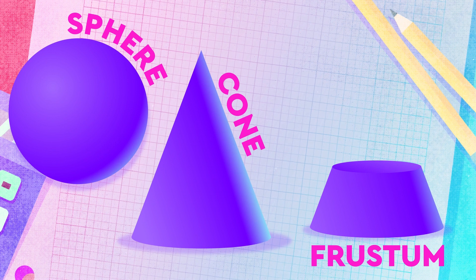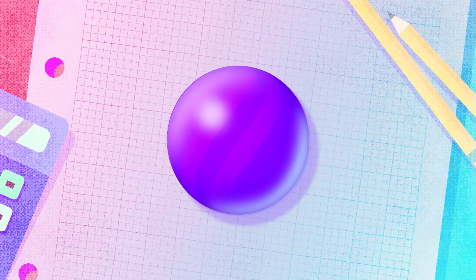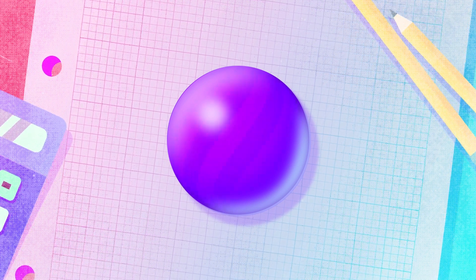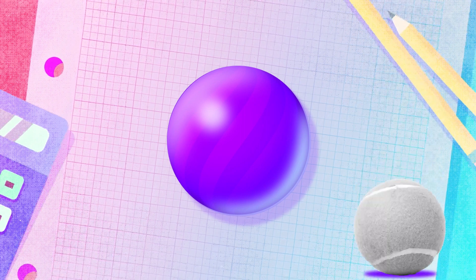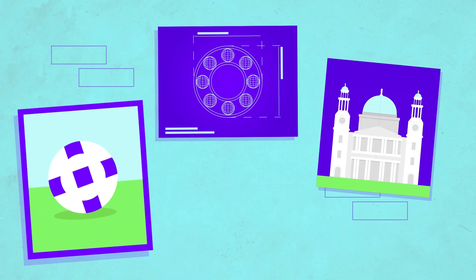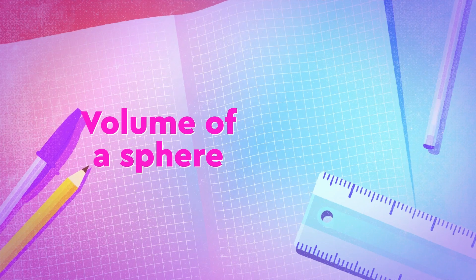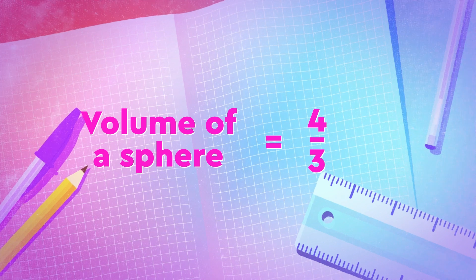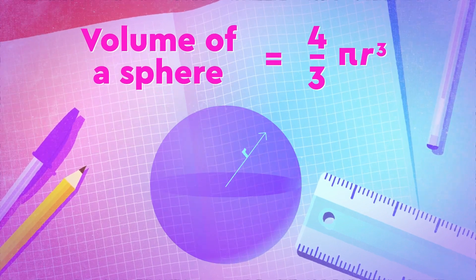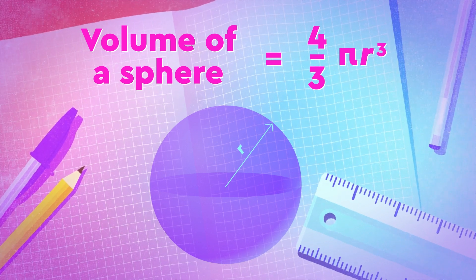We will look at the volumes of spheres, cones, frustums, and pyramids. A sphere is the name we give a shape that is perfectly round in three dimensions, such as a ball. It has many uses in the fields of sport, engineering, architecture, art, and a host of other pursuits. In math we need to be able to calculate the volume of a sphere — the constant pi is involved. The volume of a sphere is four-thirds times pi times r cubed, where r is the radius, the distance from the center to any point on the surface.